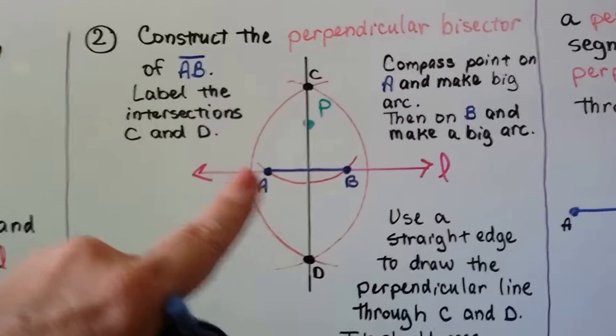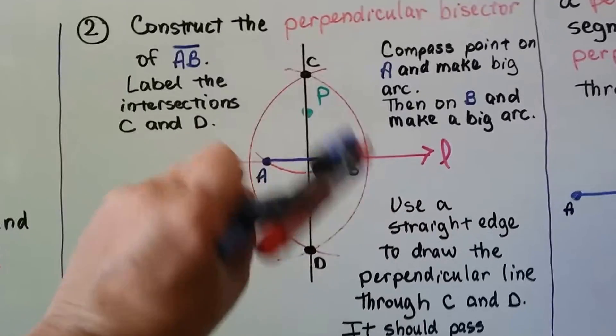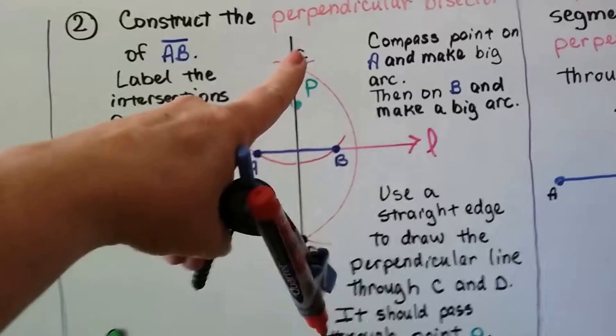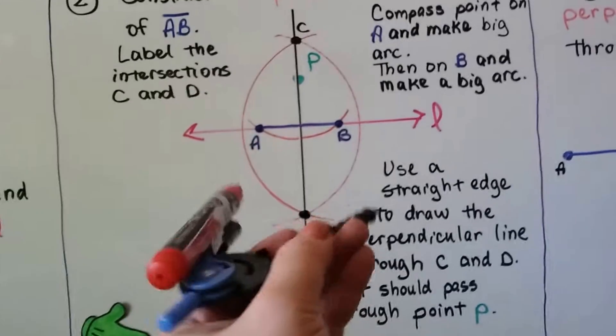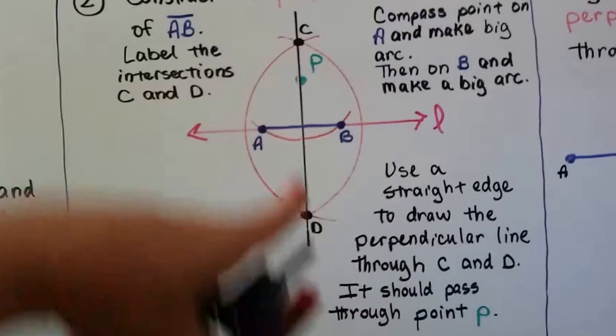Now that we have this arc here and these two intersection points A and B, we put our compass on A and make a big arc so that it comes all the way up here and all the way down here. Then we put it on B and make a big arc and where they intersect...